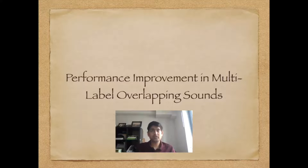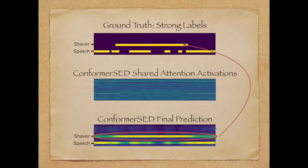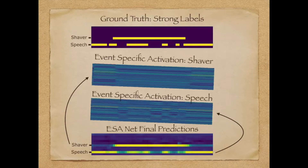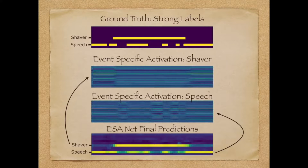Careful examination of the results revealed that this improvement in performance of ESA-Net is coming about in scenarios with overlapping sounds of different duration. As seen in this example where speech and electric shaver co-occur, the shared attention layer of Conformer-SED is unable to clearly segment electric shaver while speech is correctly segmented. In the ESA-Net, the event-specific attention of each event is less affected by the presence of another event. The ESA-Net is able to correctly segment both speech and electric shaver, as the event-specific attention of electric shaver is less affected by speech and vice versa.